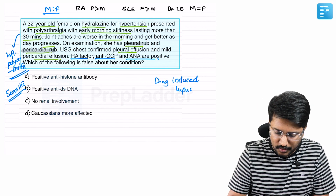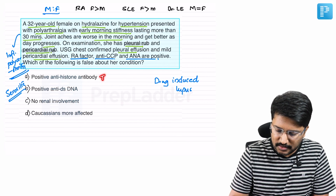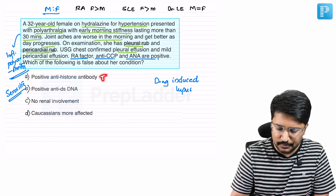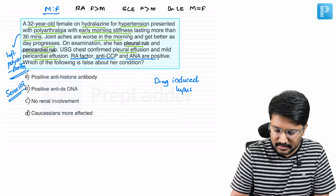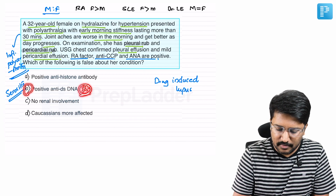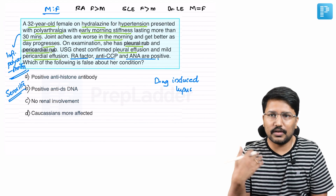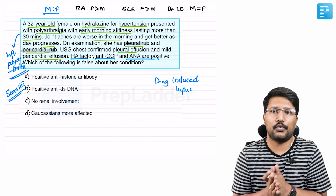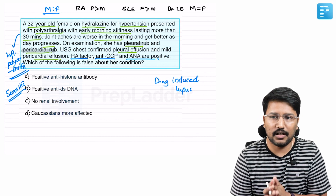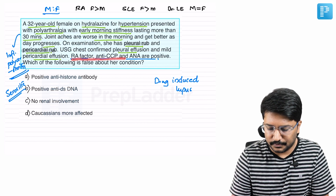But in drug-induced lupus, Caucasians are more affected than Blacks. So option D — 'Caucasians more affected' — is a true statement. No renal involvement is true. Anti-histone antibody positivity is true. Positive anti-dsDNA is a false statement. Therefore, option B is the correct answer — the false statement about drug-induced lupus.